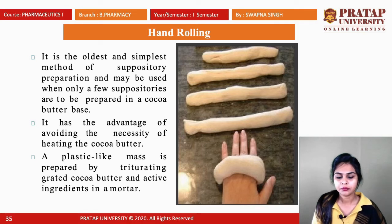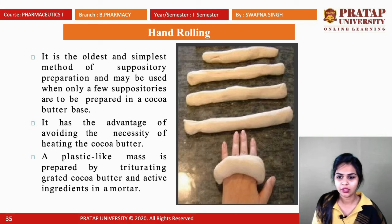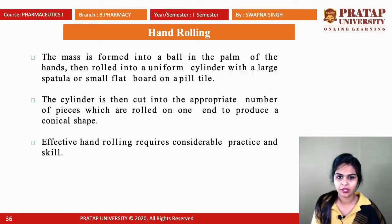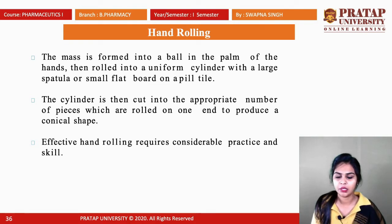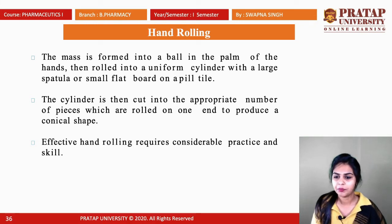In the hand rolling method, cocoa butter is added to a mortar along with all active ingredients and triturated continuously until a plastic-like mass is prepared. The mass is then formed into a ball in the palm of the hand, rolled into a uniform cylinder with a large spatula or small flat board, then cut into the appropriate number of pieces and shaped into a conical form — like rectal, nasal, or urethral suppositories. Effective hand rolling requires considerable practice and skill.